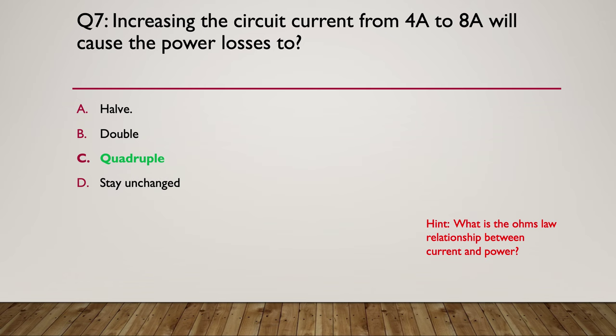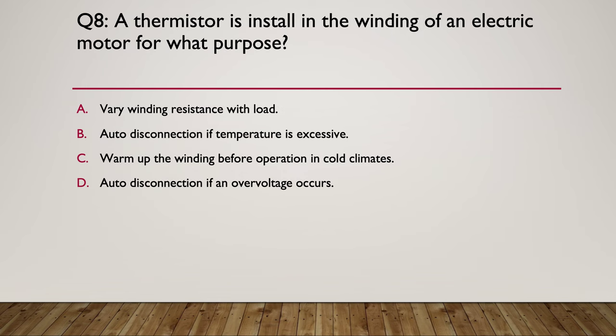Question eight: a thermistor is installed in the winding of an electric motor for what purpose? A) to vary the winding resistance with load, B) auto disconnection if the temperature gets excessive, C) warm up the winding before operation in cold climates, or D) auto disconnection if an over-voltage occurs. Pause here while you think about it.